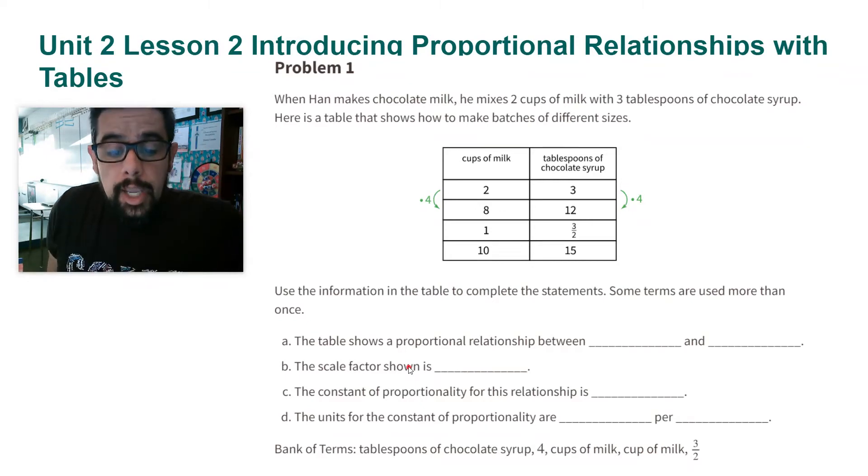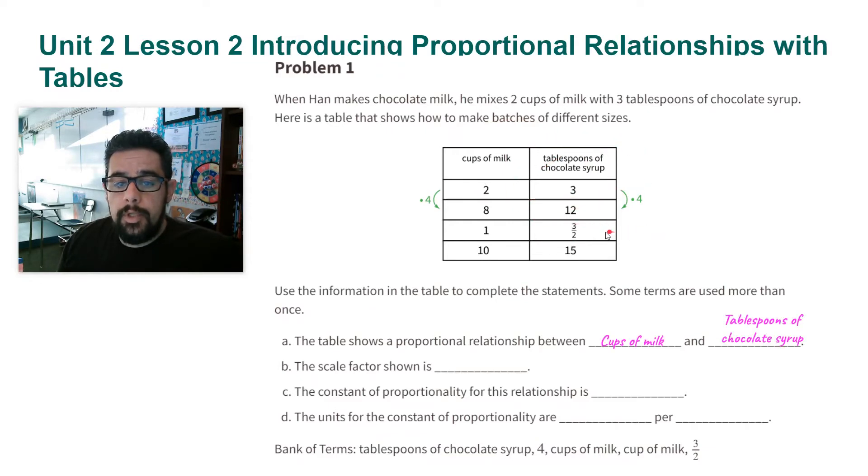Part A, the table shows a proportional relationship between blank and blank. So we can look and see what is our relationship of. It is the cups of milk to tablespoons of chocolate syrup. So that's what our relationship represents, cups of milk to tablespoons of chocolate syrup. We're not talking about the numbers here. We're talking about the things that these numbers represent. That's very important here when you're looking at proportional relationships.